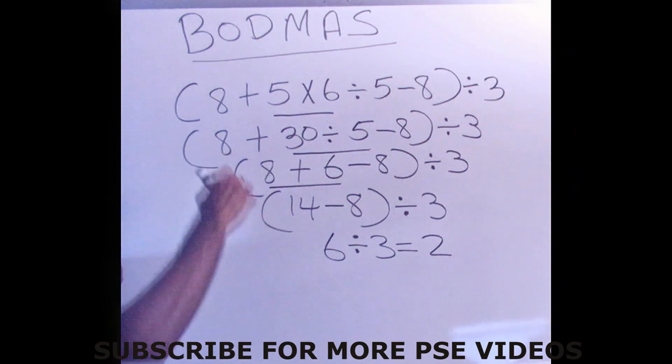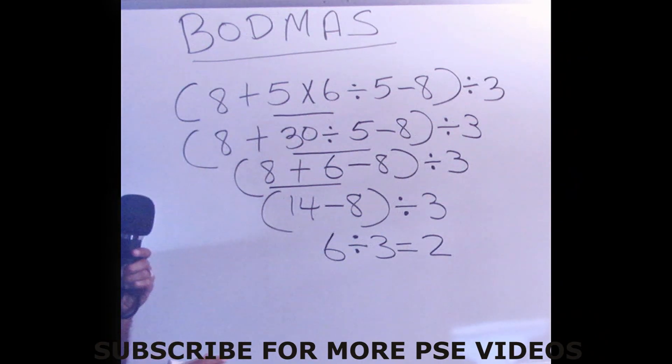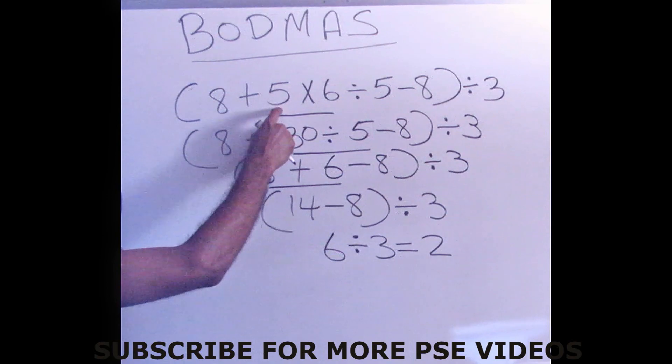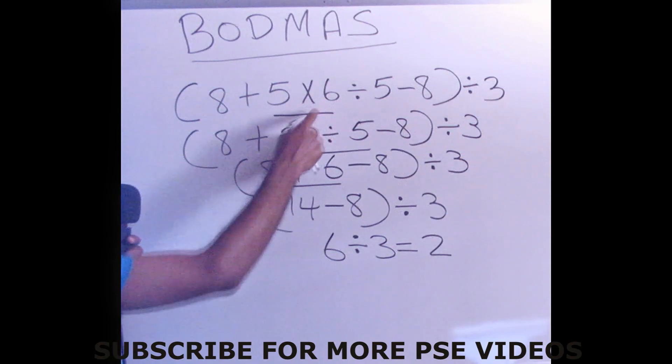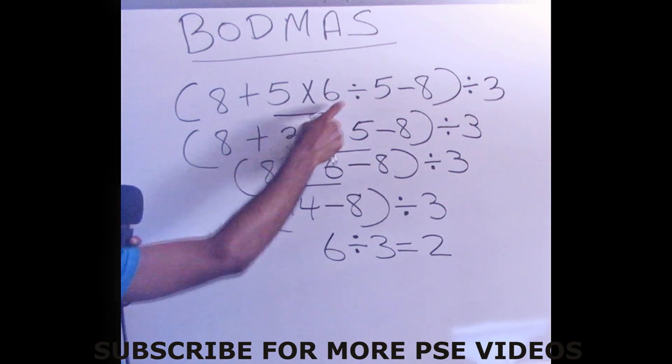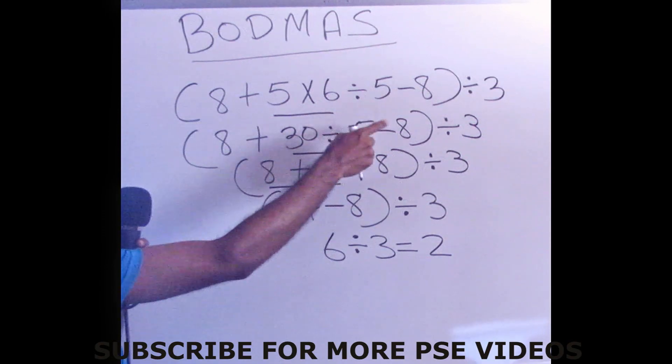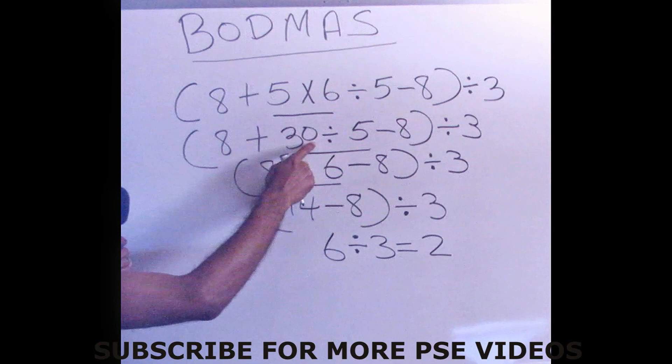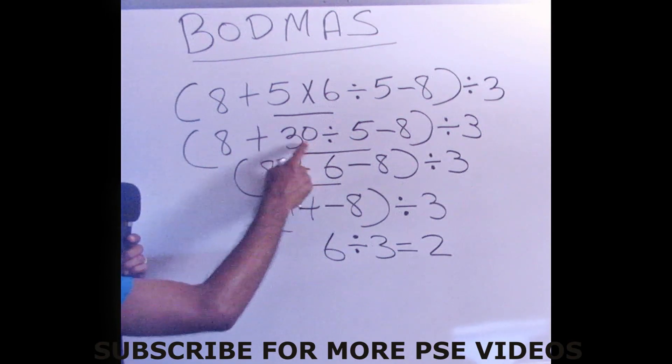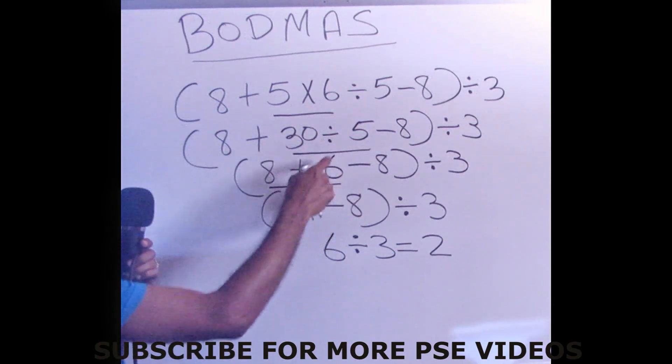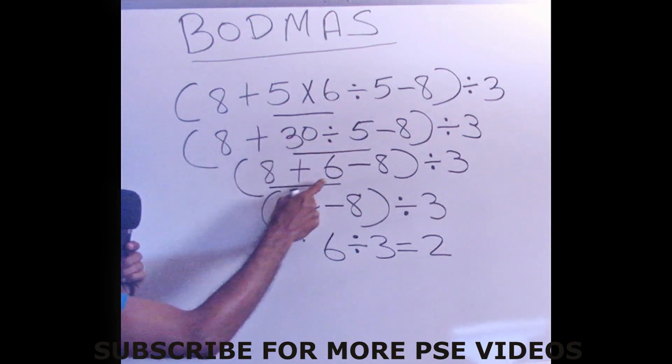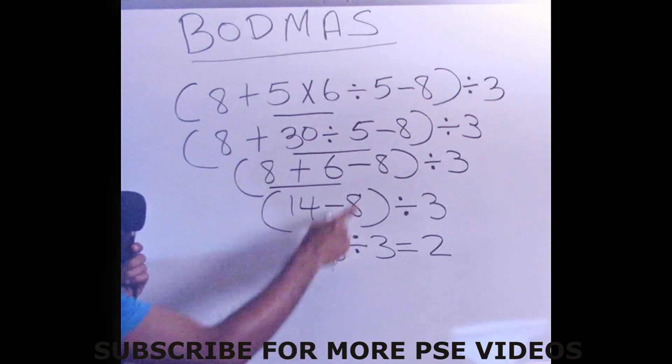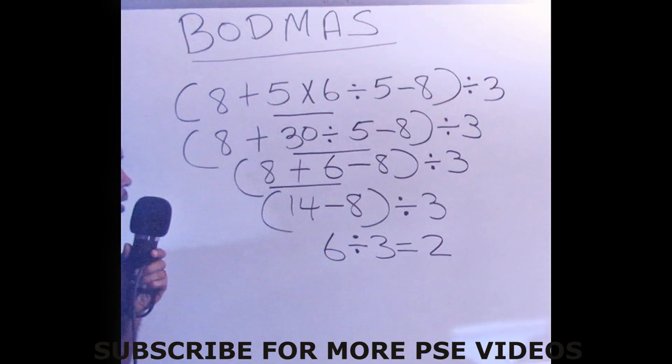So once again, remember what we did? We solved everything that is in bracket first. And we multiply 5 times 6, which is 30. Bring down your divided by 5 minus 8 plus 8. We continue with our bracket. Division comes before addition and subtraction. So we divide 5 into 30. Bring down your plus 8. Bring down your minus 8. And you divide by 3.